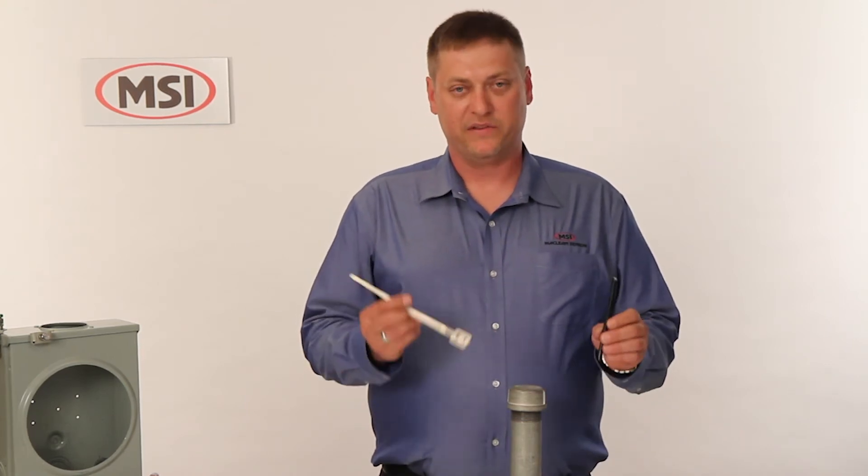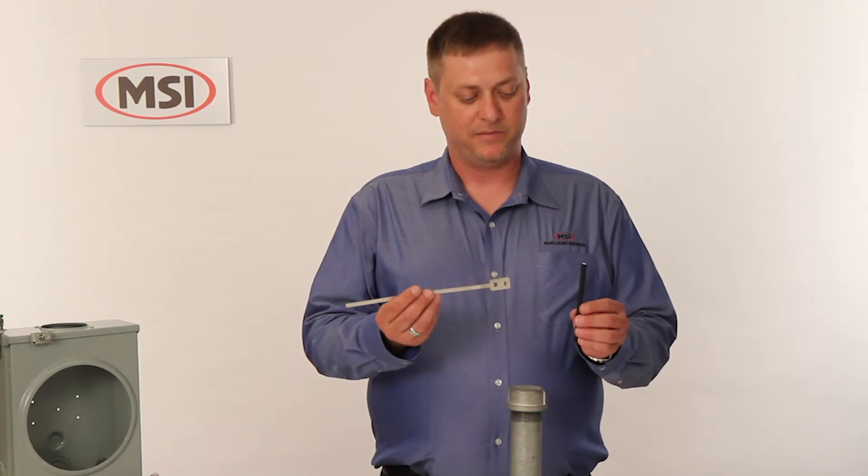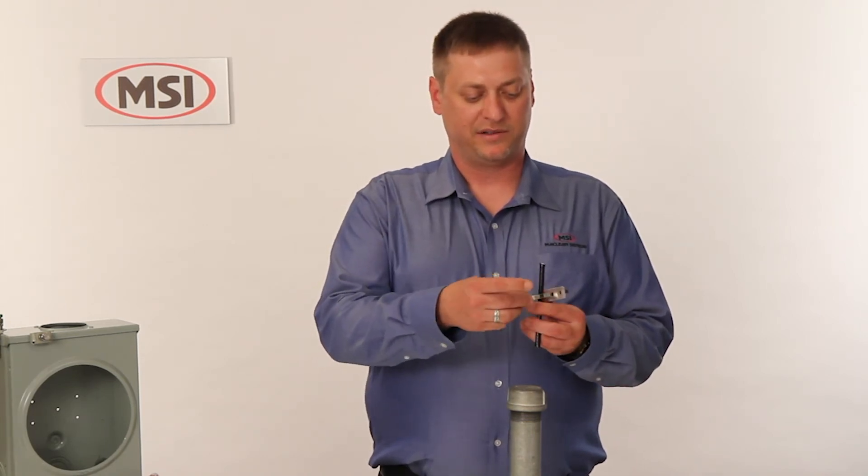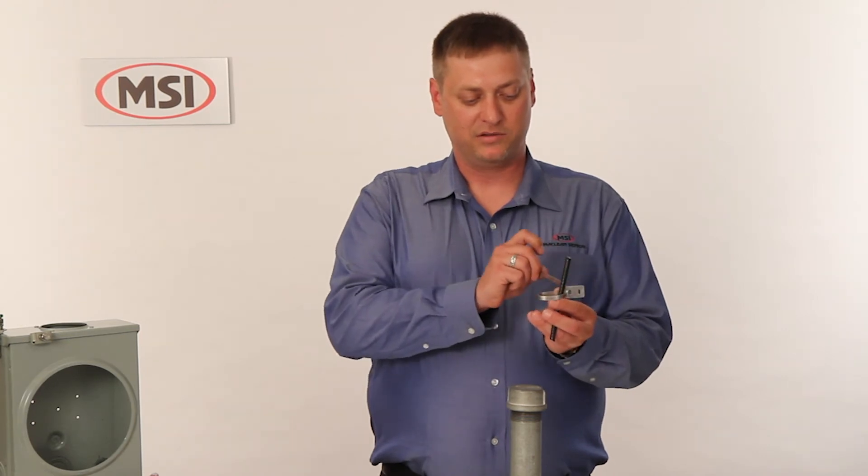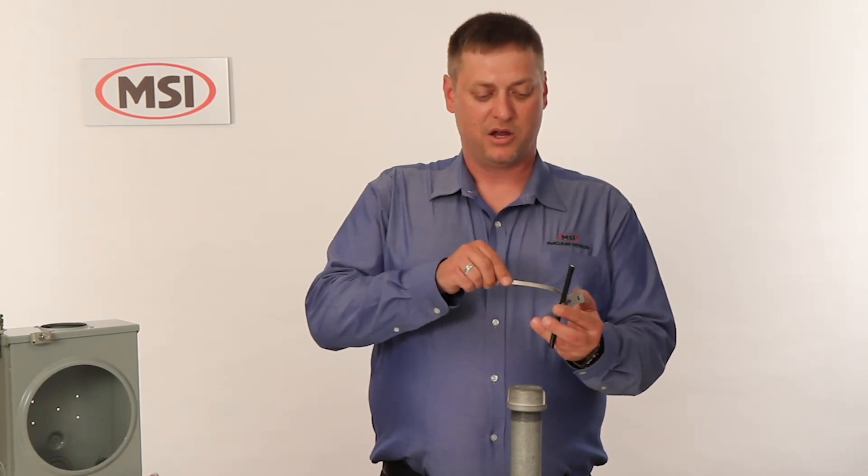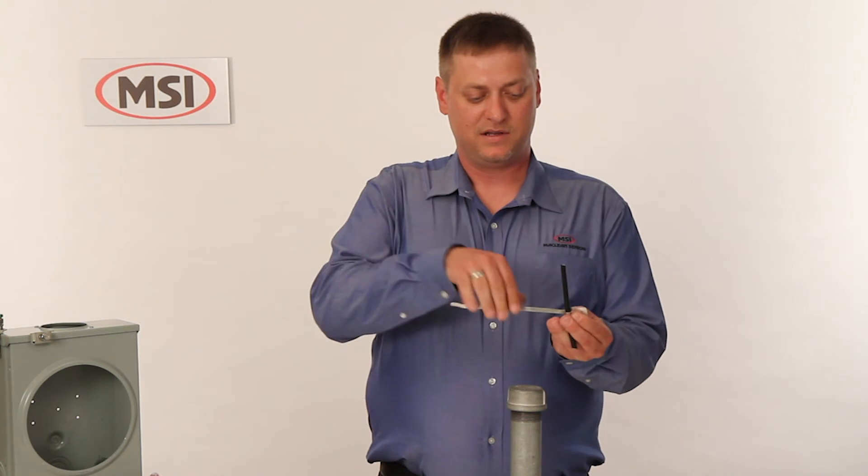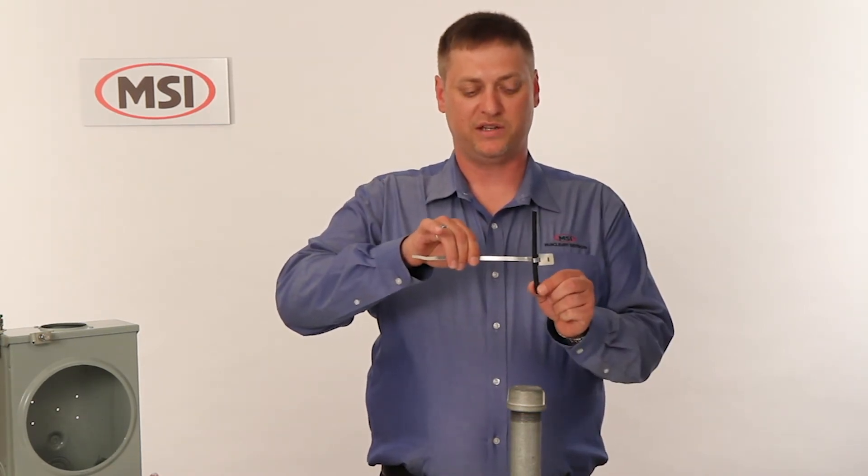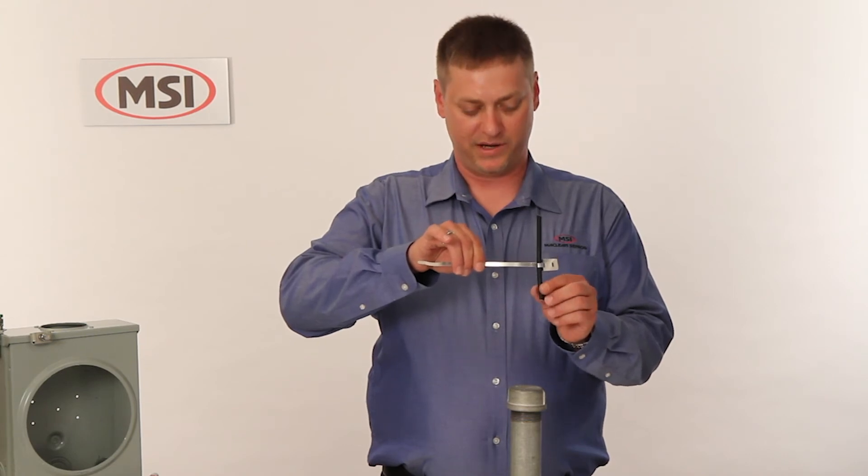When using it in this application, take the cable tie and wrap it once around the coax itself through the first locking buckle on the head. Pull that tight. Again, this is dead soft aluminum, so it will not compress the coax, changing the impedance or damaging the cable in any way.